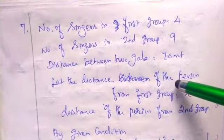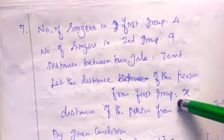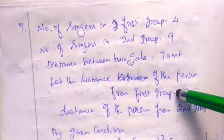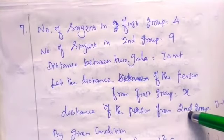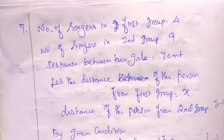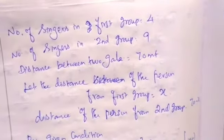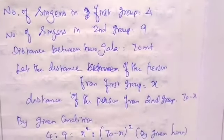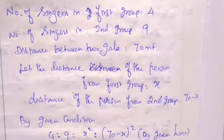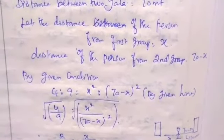The total distance between the two galleries is 70 meters. We let the distance from the first gallery to the person be x, so the distance from the second gallery is 70 minus x.